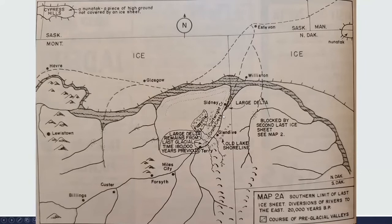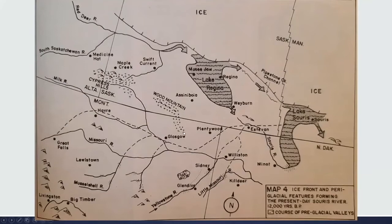By about 12,000 years ago, you have essentially modern-day flow — the Yellowstone coming off the mountains and going through Glendive and Sidney, meeting the Missouri which now flows straight east-west rather than north into Canada. Understanding how the glaciers and Yellowstone River deposits have interacted is important for knowing where you can find Montana agates.